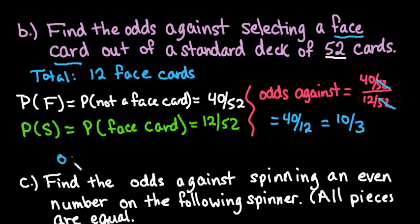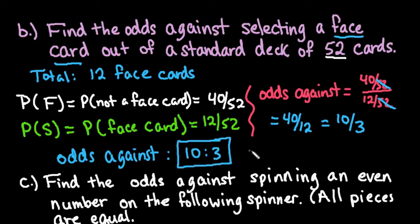So the odds against selecting a face card is 10 to 3. You can write it as 10:3 or 10 to 3, or leave it as a fraction. There are many different ways to write the odds.